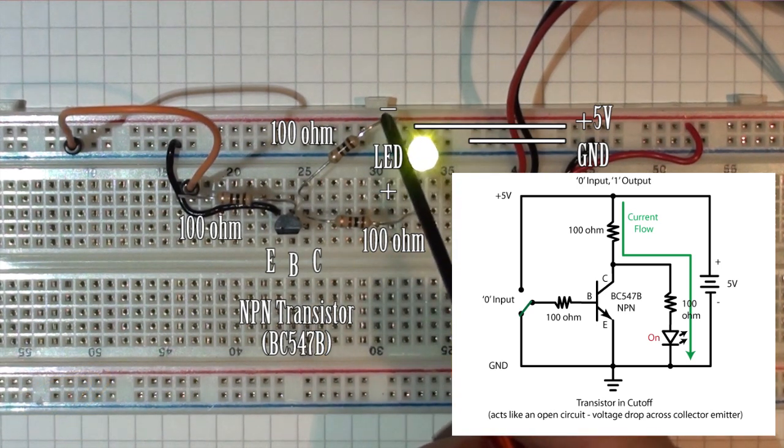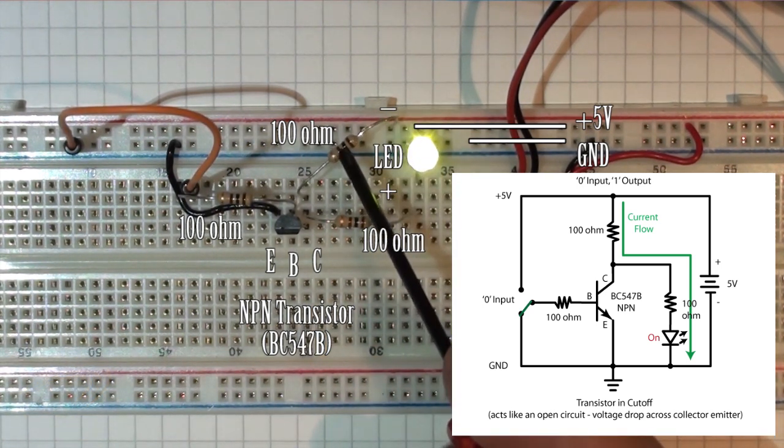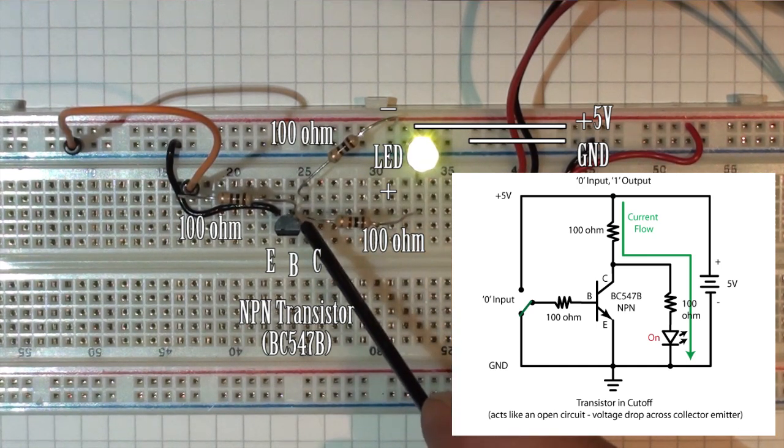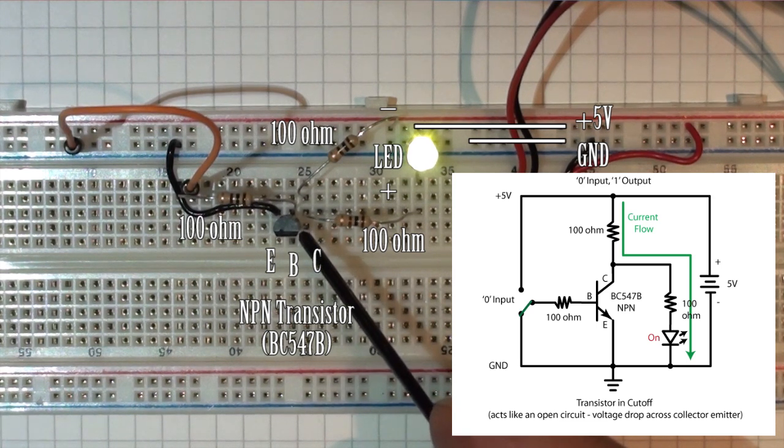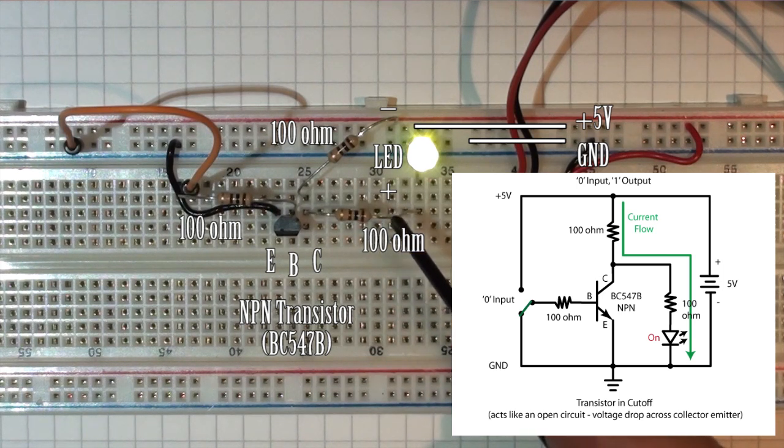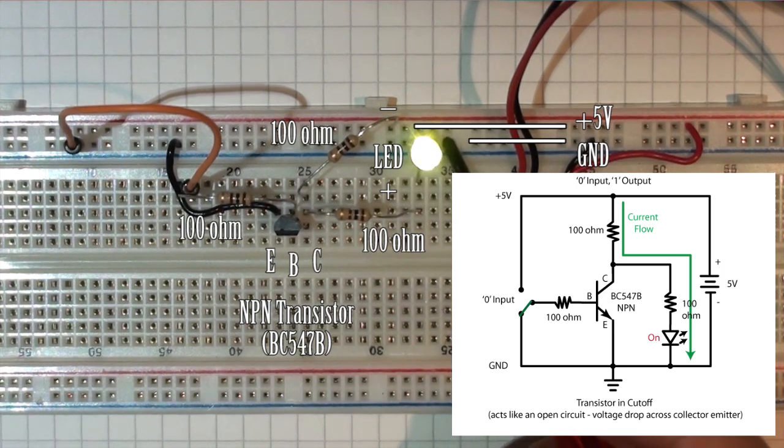This forces current to flow from the high rail through the 100 ohm resistor to the collector. Since the collector-emitter is off, the current is forced through the other 100 ohm resistor and LED to ground.